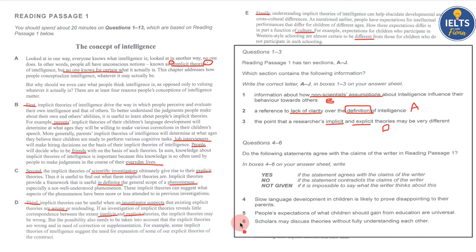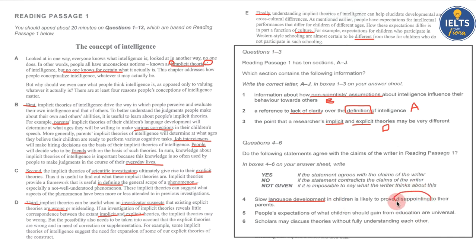You can see there are three yes/no/not given questions, and this will mean that one is yes, one is no, and one is not given. I always suggest that you guess these. Number four says 'slow language development in children is likely to prove disappointing to their parents.' We know there's a paragraph about language development and parents, but it doesn't mention anything emotional — there's no idea that it's disappointing. You could probably guess that an academic article is not going to say parents feel disappointed by their child's slow language development — and it certainly is not given.